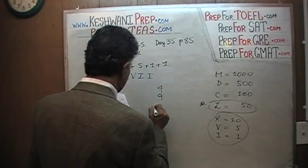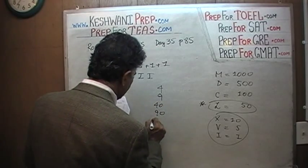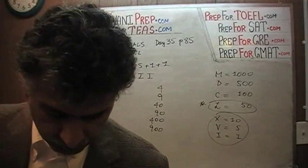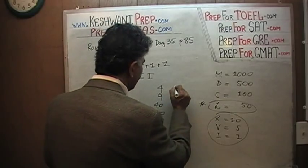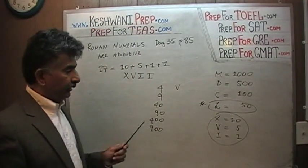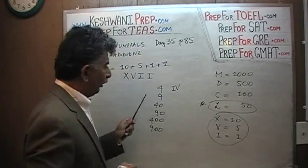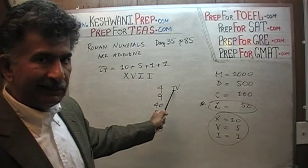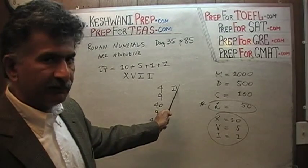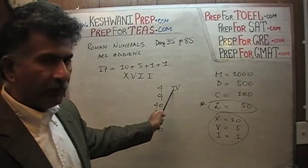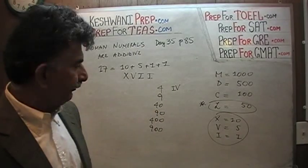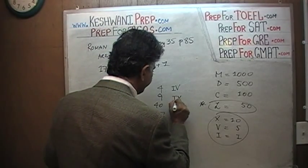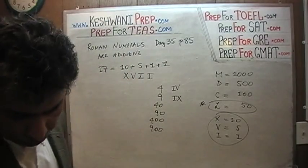Let's do 4, 9, 40, 90, 400, and 900. Pause the video if you have to and see if you can write them on your own. 4 is simply: you write your 5, and you write the I to the left of it. As long as a symbol denoting a lower value appears to the left of a symbol denoting a higher value, that lower value is to be subtracted from the higher value. 9 is the same way — write your 10 first, and then take away 1 from it.